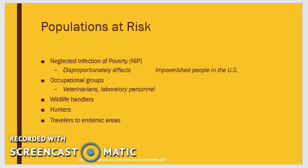The lower prevalence rate in the U.S. is mainly due to higher standards of living and the absence of triatomine species that are well adapted to living in human houses. According to the CDC, Chagas is considered a neglected infection of poverty in the U.S., since it is found mostly in those with limited resources and limited access to medical care. People in certain occupational risk groups may be exposed, including veterinarians, technicians, laboratory personnel, individuals who work with wildlife, hunters, and travelers to areas where Chagas is endemic.